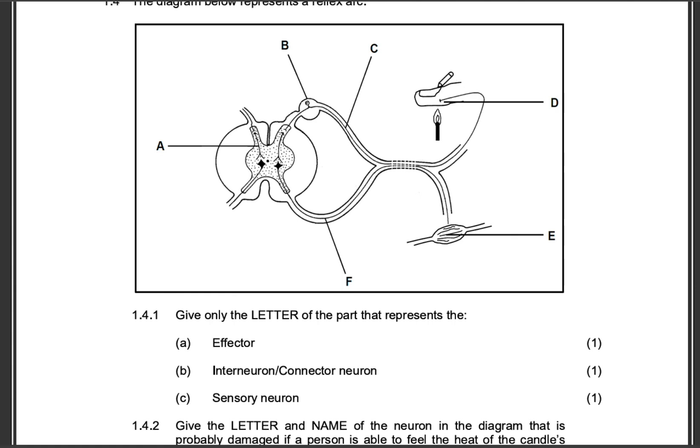We can see there's a finger, there's a candle. So that means there'll be receptor cells receiving that change in the environment, which is the heat. Sending these impulses through this neuron here, neuron C. And the impulses will be transmitted to this neuron here in the gray matter. So that is neuron A.